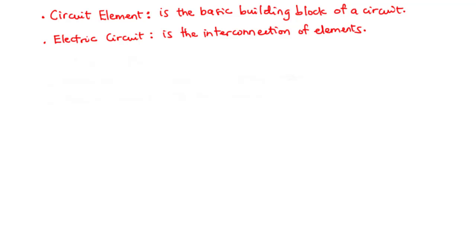Let's start by defining what a circuit element is. A circuit element is said to be the basic building block of a circuit. We define an electric circuit as the interconnection of elements — we can have the interconnection of voltage sources, current sources, resistors, capacitors — and this interconnection of elements is what constitutes an electric circuit. Our major concern in this lesson is to study the various elements that make up an electric circuit, and there are two types of elements in an electric circuit.